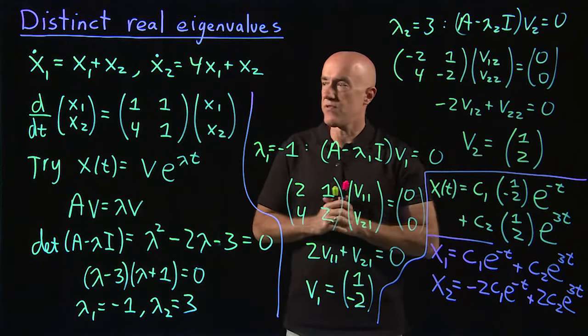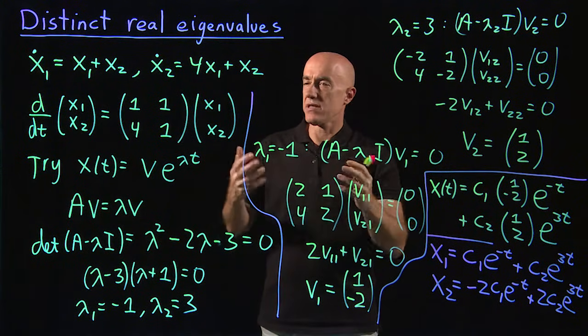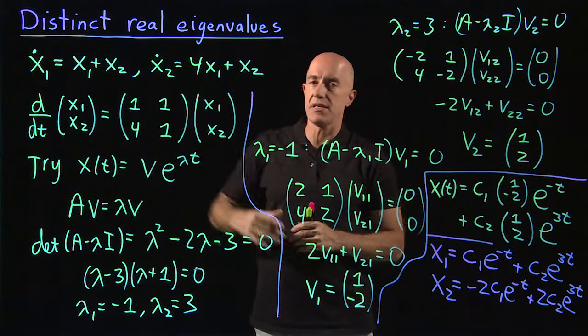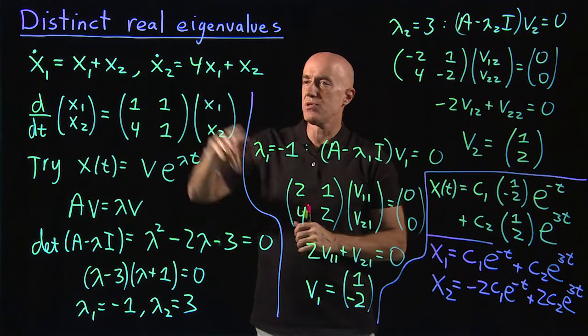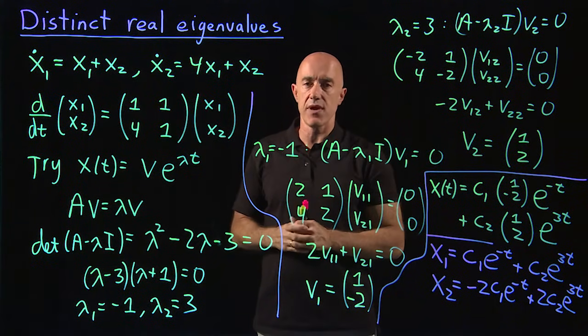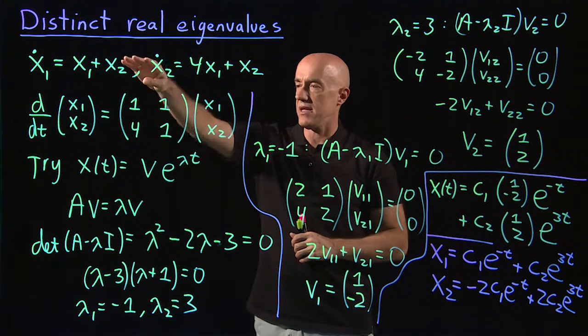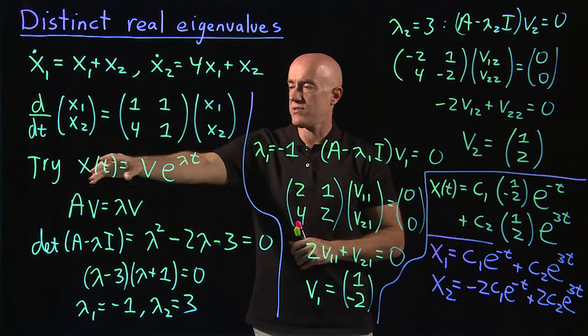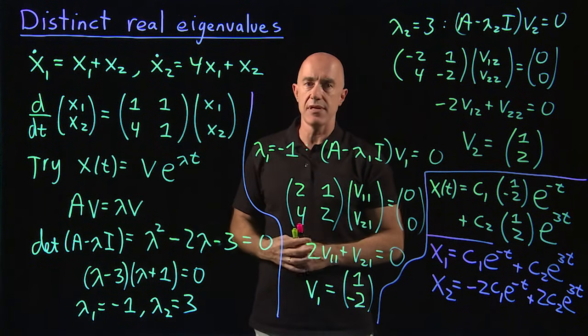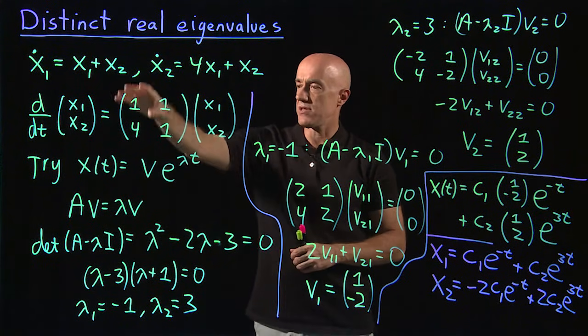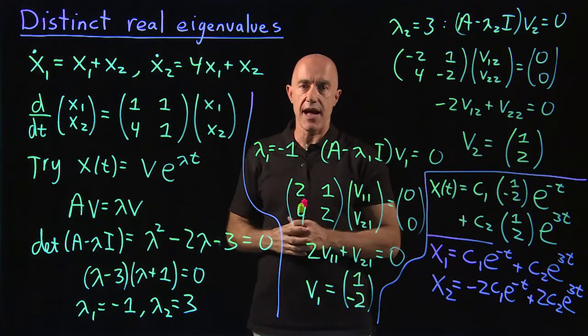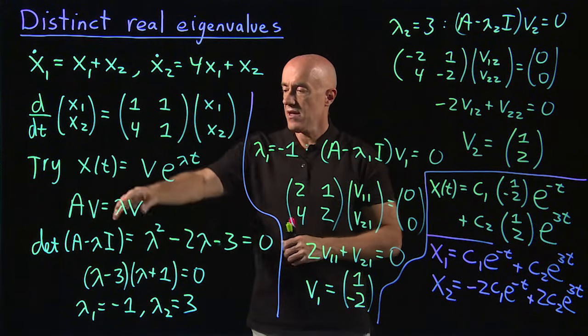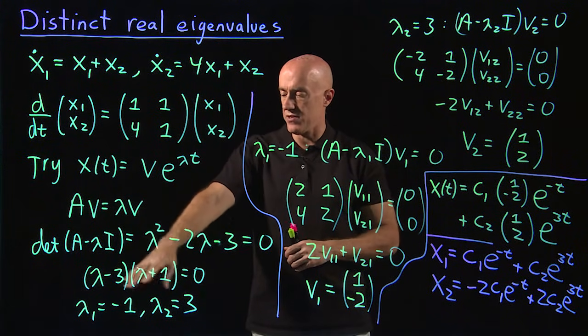So let me review what I did. We're considering a case of two first order linear homogeneous differential equations where the roots of the characteristic equation are real and distinct. We do our ansatz where we assume that x equals v e to the lambda t. Substitution into the differential equation gives us our eigenvalue problem Av equals lambda v. The characteristic equation gives us two eigenvalues,